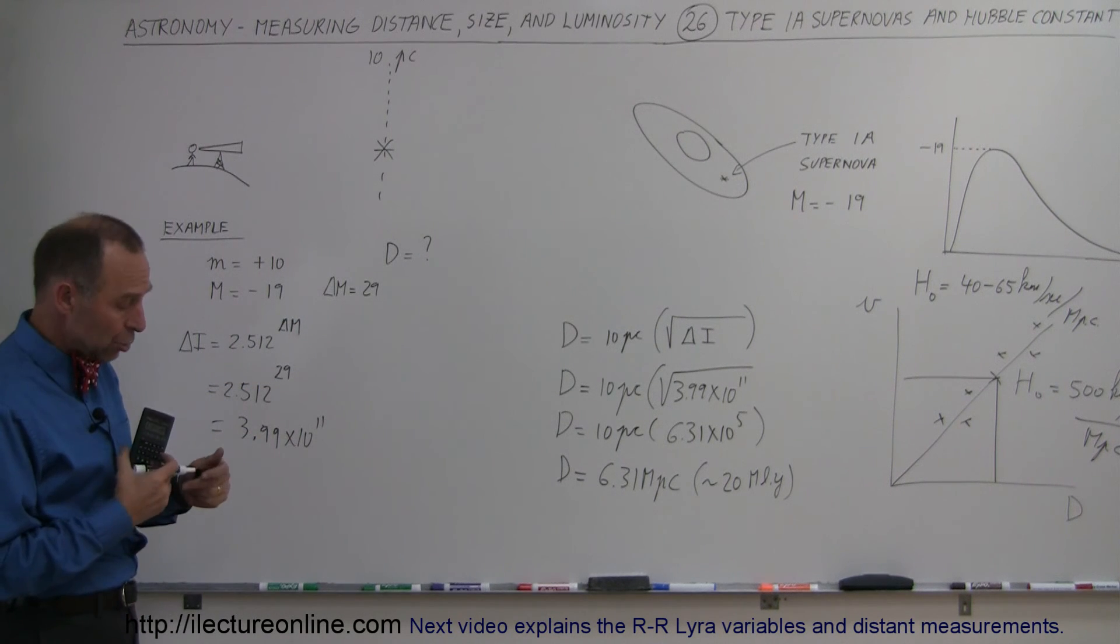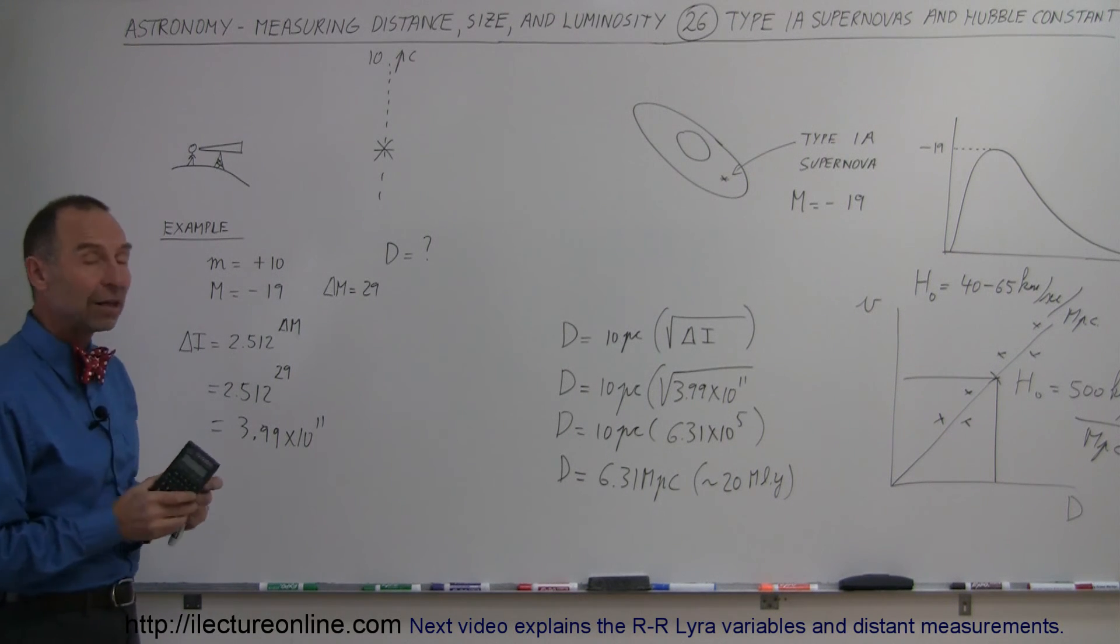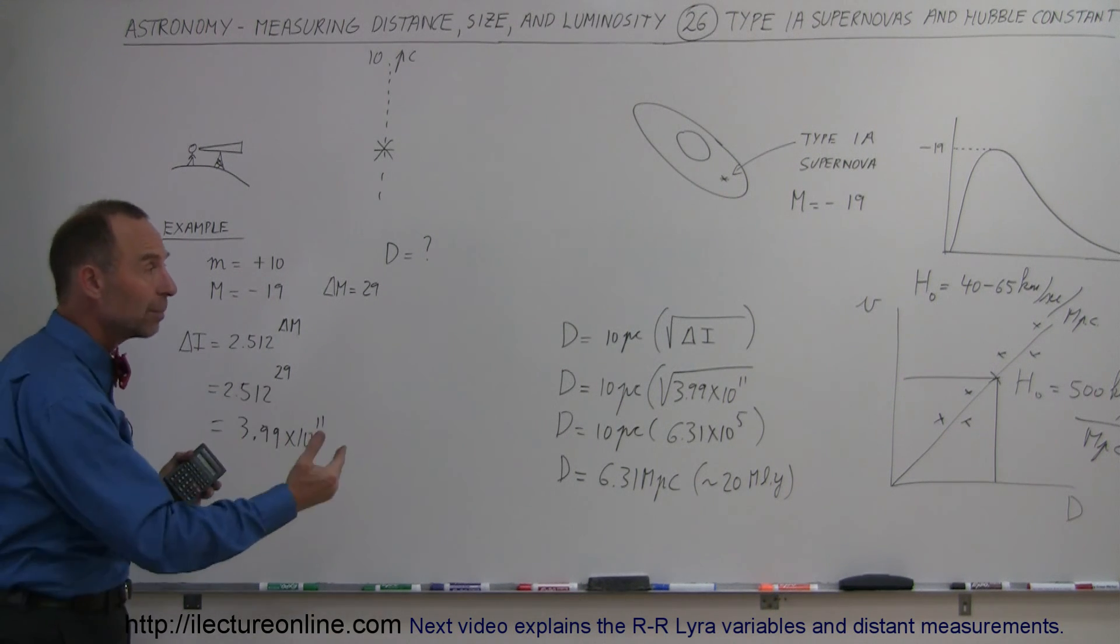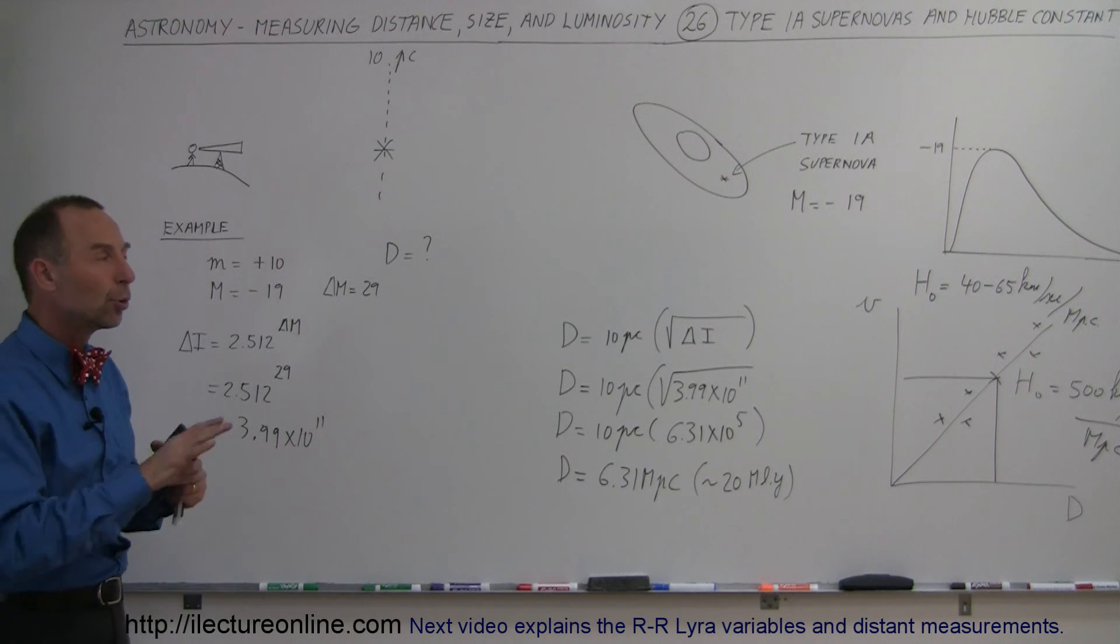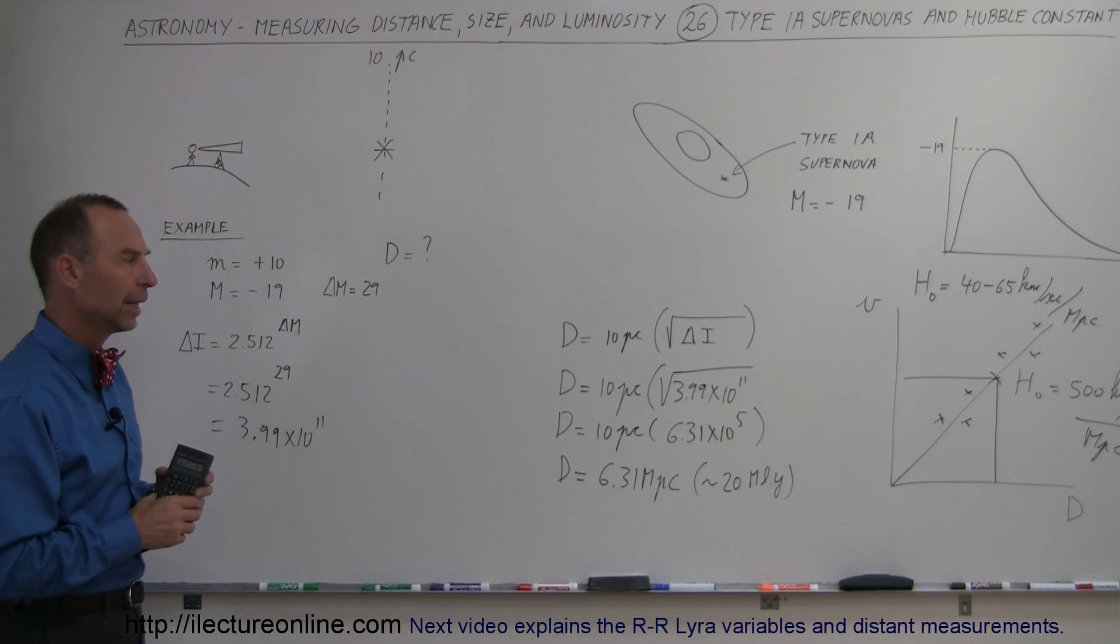If that was a true value, that would mean that the universe was more like about 20 billion years old. And for a while, that was the accepted value of the age universe, that it was closer to 20 billion, rather than what we now know is close to 14 billion years. So, slightly less than 14 billion years.